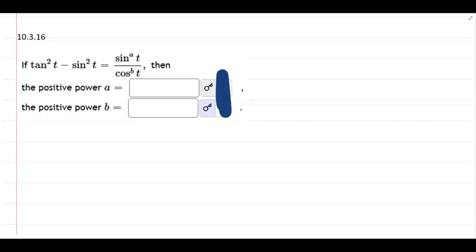This problem, we have tangent squared minus sine squared, and we're supposed to turn it into sine to a power divided by cosine to a power.